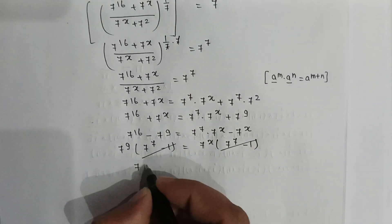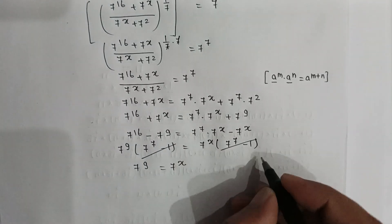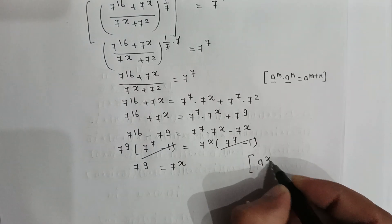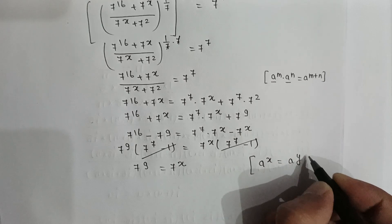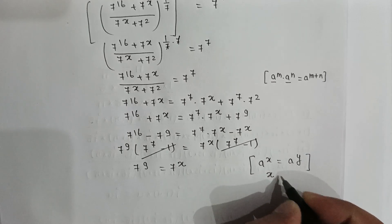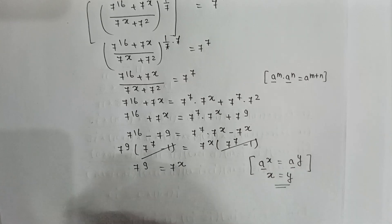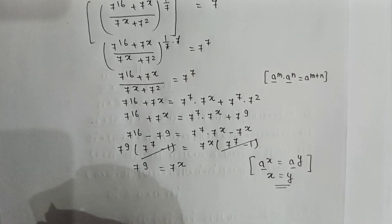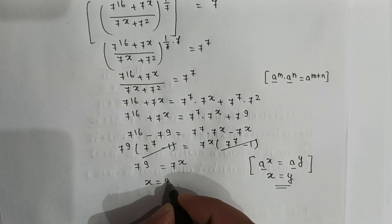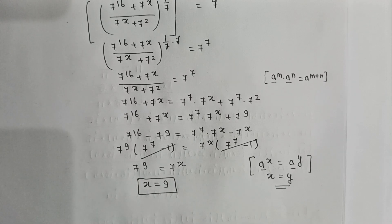So we get 7 to the power 9 is equal to 7 to the power x. As we know, if a to the power x equals a to the power y, then x equals y since the base is the same. Therefore x is equal to 9, and this is our answer. Thank you, friends.